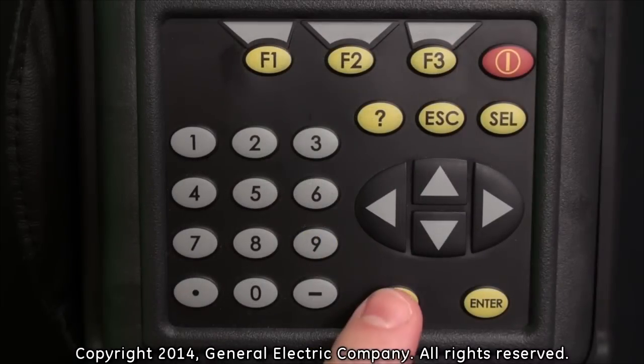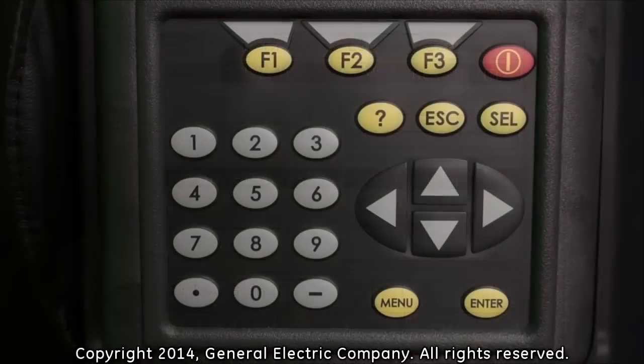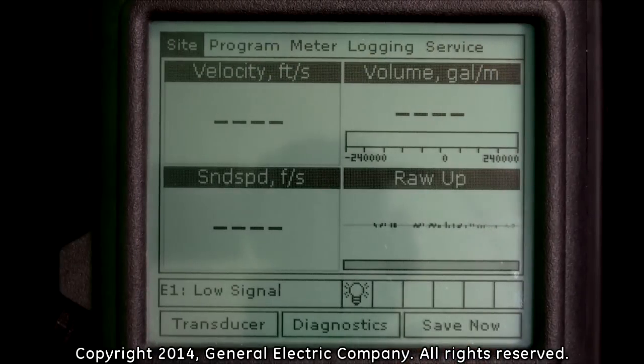Press the menu button on the keypad to bring up the menu at the top of the display screen. Use the left or right arrow keys on the keypad to highlight the program menu selection.